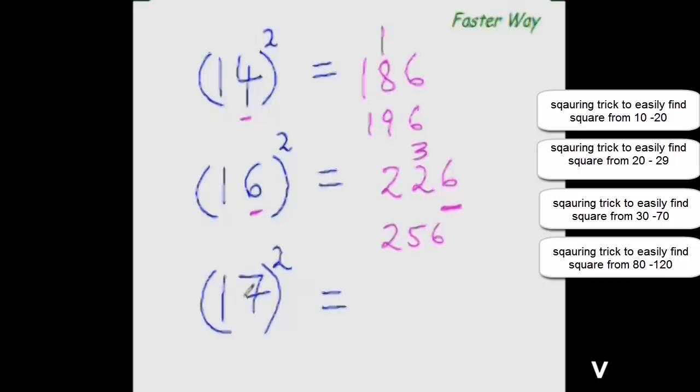Now find out 17 square. So add this 7 to 17. It would be 24. Now one more place to go. So 7 square is 49. So write 4 here, 9 here. 24 plus 4 is 28. So 289 is the answer.